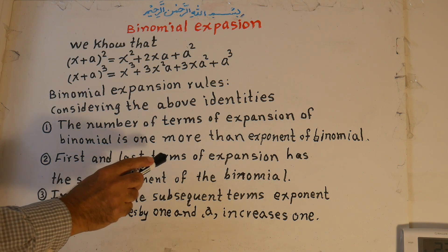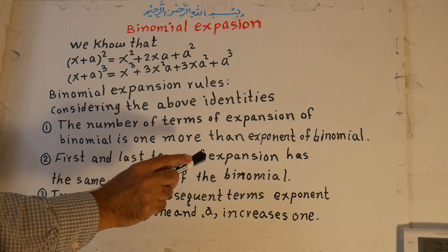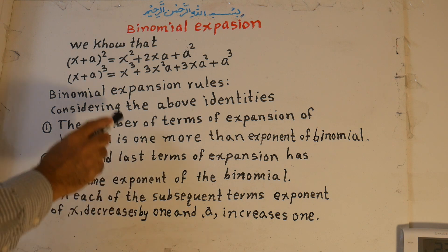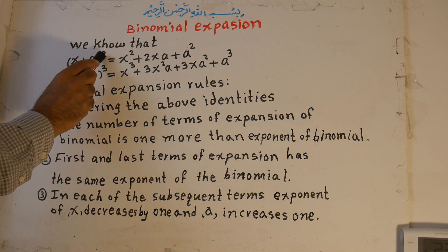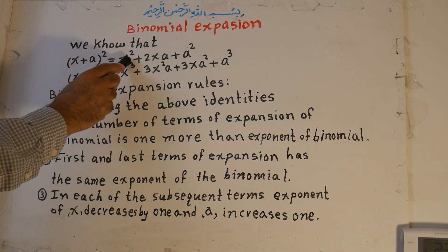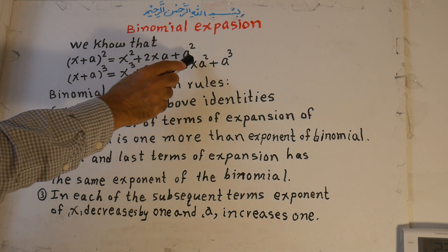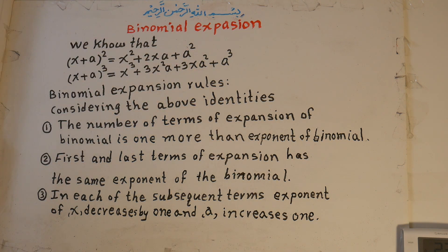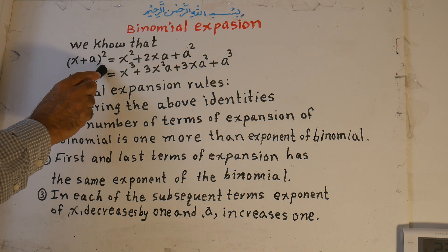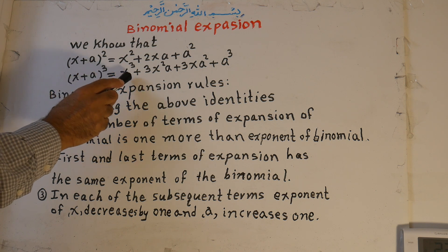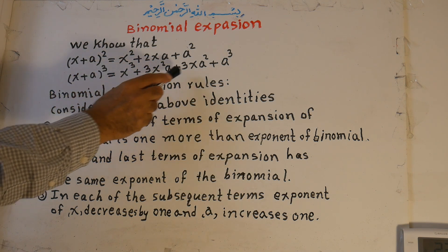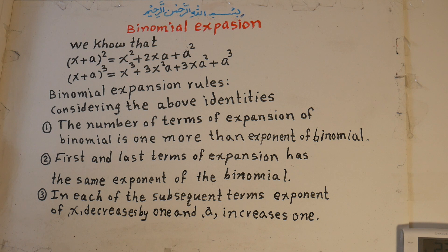Number two: the first and last terms of the expansion have the same exponent as the binomial. The exponent of the binomial is 2, and the first term also has the power of 2, and the last term also has the power of 2. Here the exponent is 3, the first term also has exponent 3, and the last term also has exponent 3.